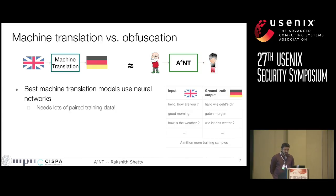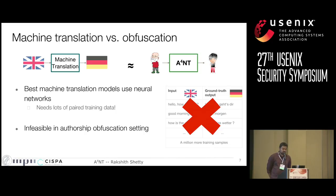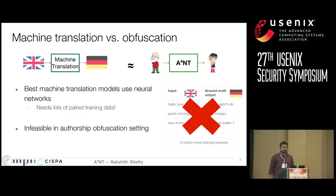By paired training data, I mean you need the same piece of text in, say, English and the same meaning text in German — and you need a million such examples. However, this is not feasible in the obfuscation setting because you can't get the same piece of text written by multiple different authors while preserving the meaning. However, it's easy to get a lot of text written by adults and a lot of text written by teenagers. So can we learn to do this obfuscation automatically using only unpaired training data?